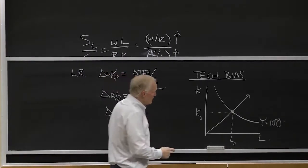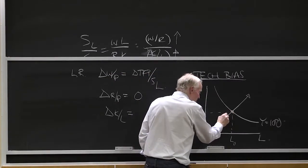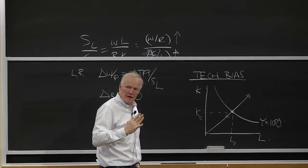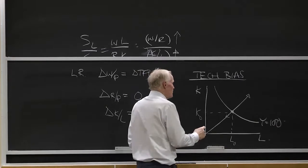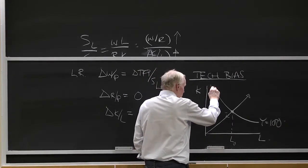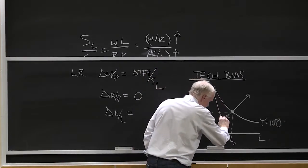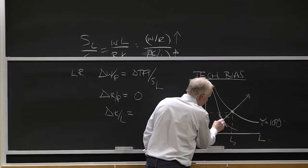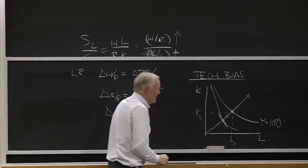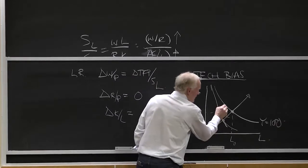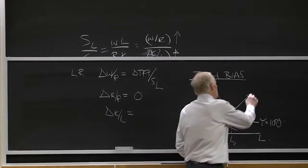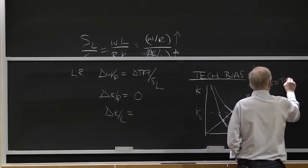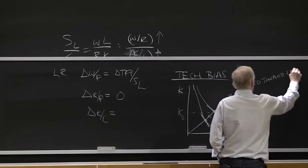Now, what do we mean by technical bias? Well, the idea of technical bias is, as this curve shifts in, is it twisting one way or the other? Technical bias in favor of labor would mean it's sort of shifting in like that. It's getting steeper. And the way to think about that, what that means, if it's getting steeper, this is bias toward labor.